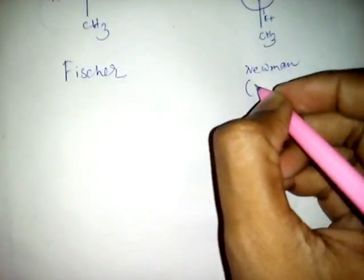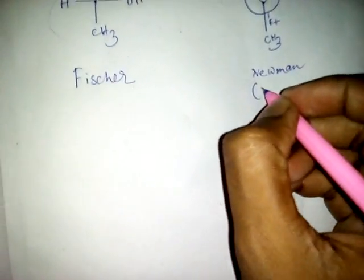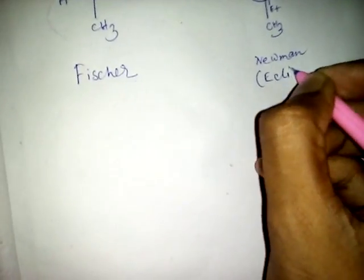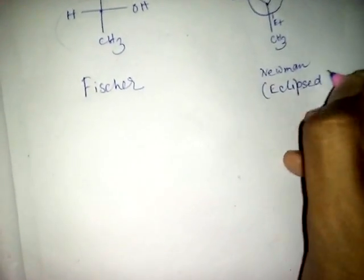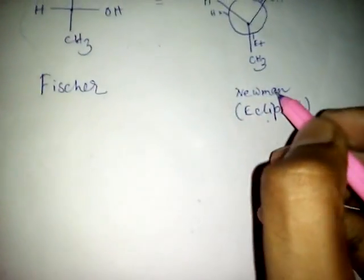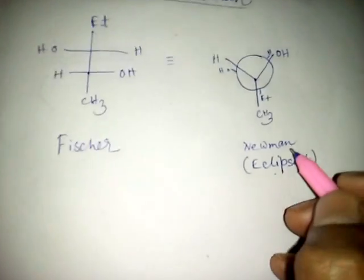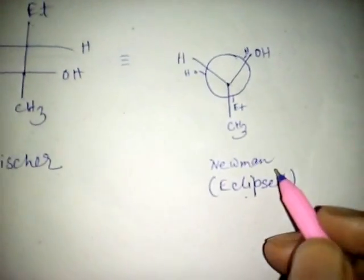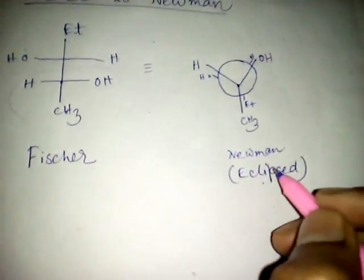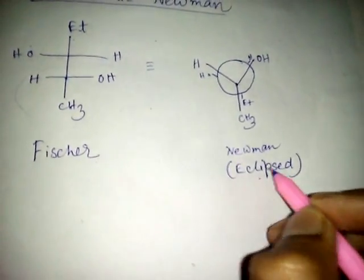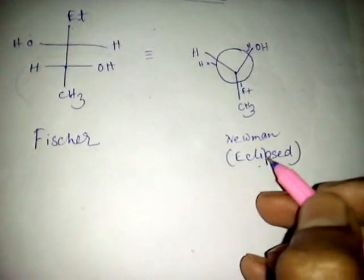It is a Newman projection we get. It is the type of ellipse. Newman projection is of two types: ellipse and staggered. It is ellipse, so to convert ellipse to staggered we need a 60 degree rotation of this ellipse.